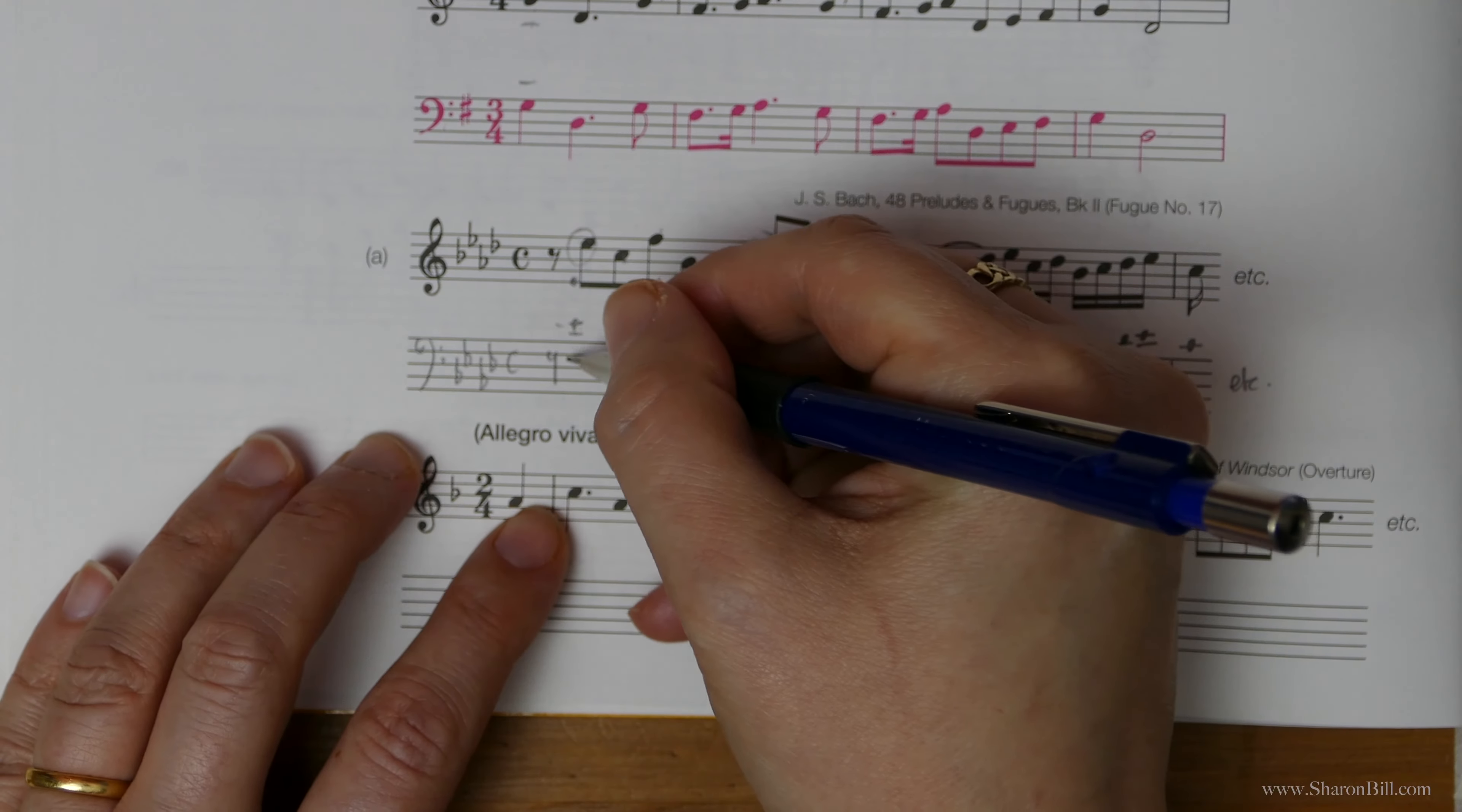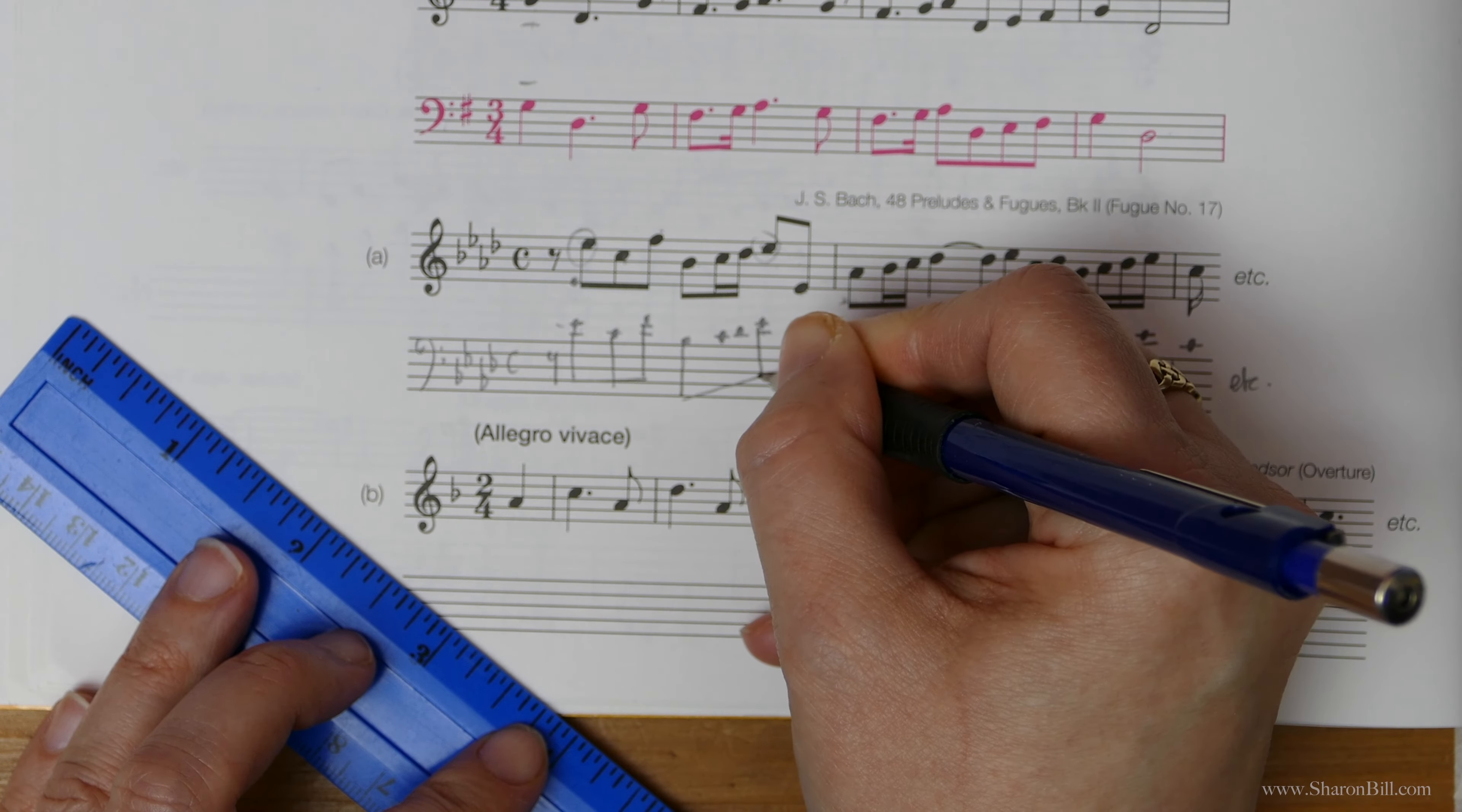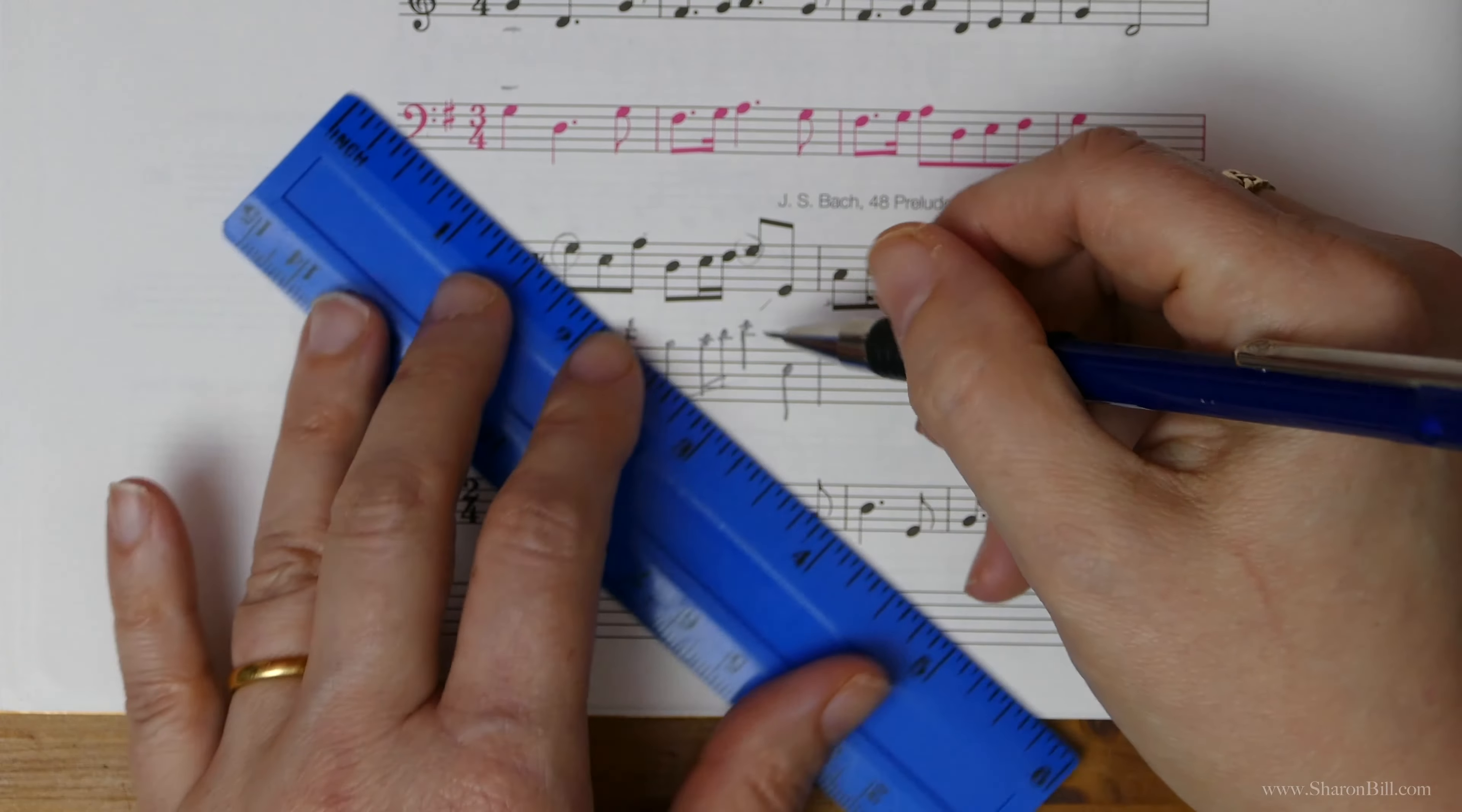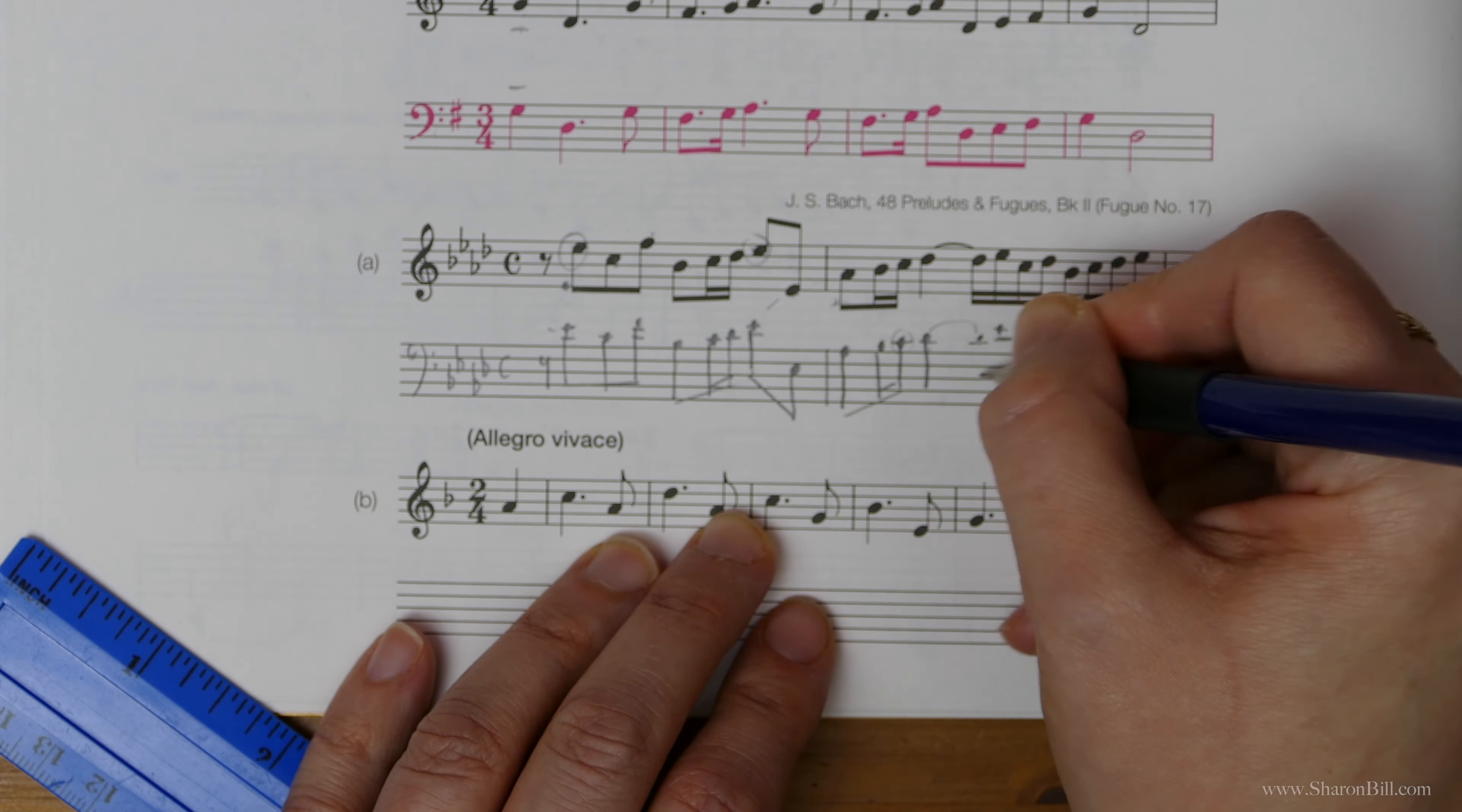There we go, so we just need to add the stems. By all means use a ruler if you're not sure you can do it neatly. I'm just trying to be quick here for you. Keep the beaming as they've put it. There's semis, an octave drop. We've got to change the position of the stems, because we're now high up in the bass clef.